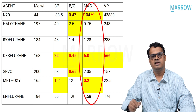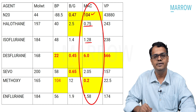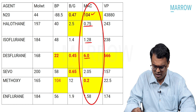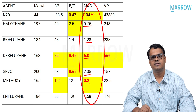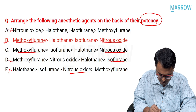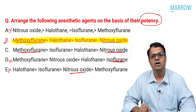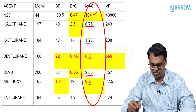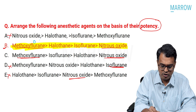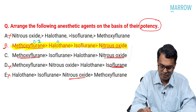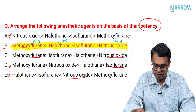MAC of nitrous oxide is 104. For the newer agents: halothane 0.75, isoflurane 1.28, desflurane is maximum at 6.6, sevoflurane 2.04, and methoxyflurane 0.2. So if you arrange by potency, methoxyflurane is first, followed by halothane, then isoflurane, then desflurane, and nitrous oxide is last. Methoxyflurane is 0.2, halothane is 0.75, isoflurane is around 1.2, and nitrous oxide is 104.